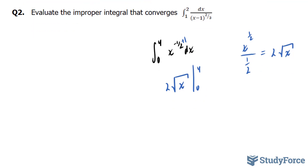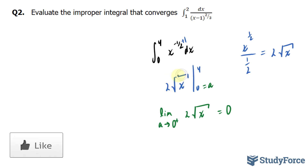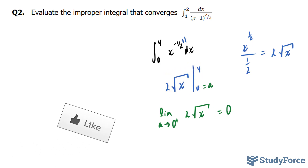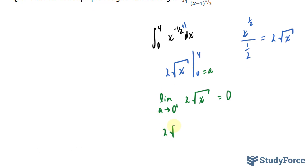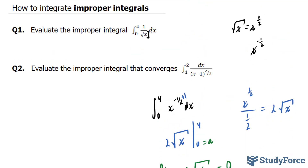Evaluating at four is easy, but zero is problematic. So I'll set zero equal to an arbitrary letter — let's call it a — and take the limit as a approaches zero from the positive end, to the right of zero on a number line, for the function two times the square root of x. Substituting gives two times the square root of four which is four, minus two times zero which is zero. So four minus zero gives us the answer to question one: four.